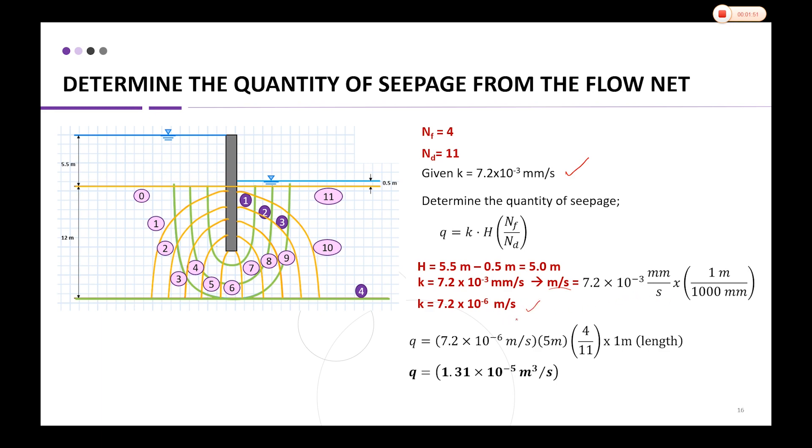So you have k in meters per second, then substitute into the equation: q = k × h × (Nf/Nd) = 7.2×10⁻⁶ m/s × 5 m × (4/11).